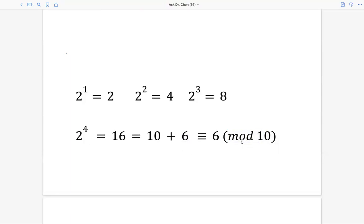So in this sense, in module 10, 10 is the same as 0. So any multiples of 10 is the same as 0. So that's what this symbol means, those 3 bars.